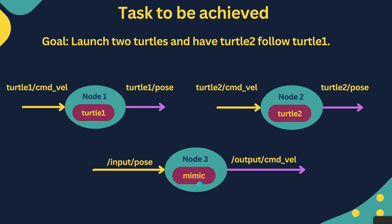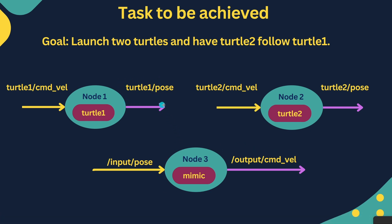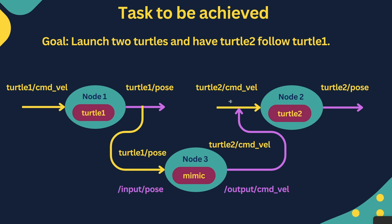The mimic node's input topic is input_pose and its output is command_velocity. What we want is for it to subscribe to turtle1 pose and publish on turtle2 command_velocity. So we use the configuration in the launch file to remap: changing the input topic name from input_pose to turtle1 pose, and changing the output command_velocity topic to turtle2 command_velocity. By doing this, the mimic node will transform the pose of turtle1 into commands for turtle2.